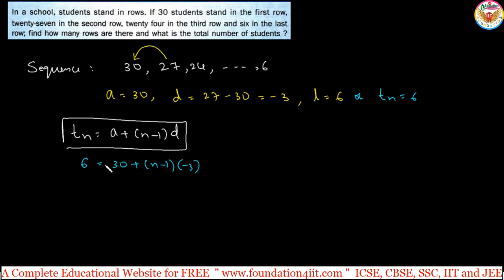Solving this equation to get n: 6 minus 30 equals (n-1) times (-3). So -24 equals (n-1) times (-3). Divide by -3: the negatives cancel, giving 8 equals n-1. Therefore n equals 9. There are 9 rows.